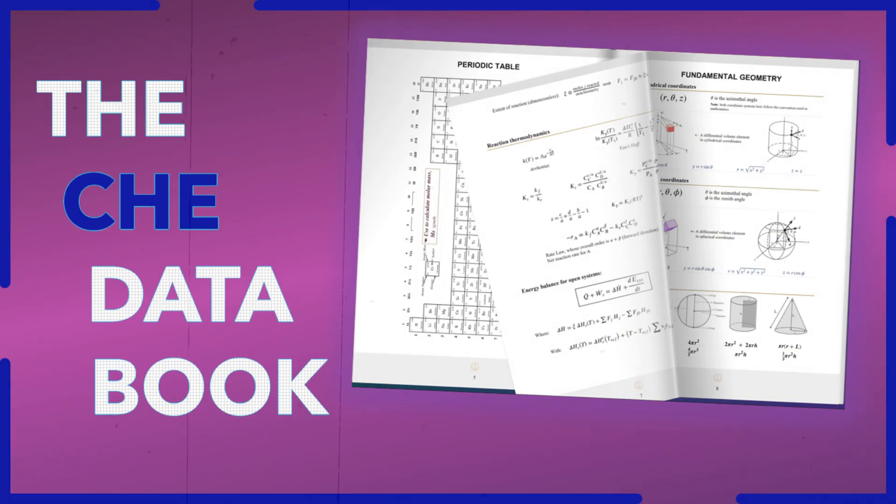Like a controlled energy swap. Exactly. And the Data Book gives you the tools to design those, make them as efficient as possible. Introduces something called the log mean temperature difference, LMTD. Okay, now that sounds a bit much. What's so special about it? It's how you measure the driving force behind the heat transfer. Because the temperature difference between the hot stuff and the cold stuff, it changes as they move through the exchanger. LMTD gives you the average, so you get a more accurate picture.